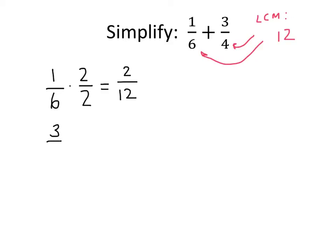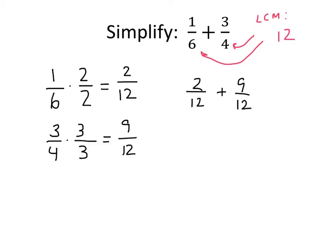We want to do the same thing with 3/4, but to get a 12 on the bottom of that fraction, we have to multiply top and bottom by 3. 4 times 3 is 12, and 3 times 3 is 9. So now we see that what we're really doing is adding 2/12 plus 9/12. And now that we have a common denominator, we can just add the numerators — the numbers on top — and we get our answer of 11/12.